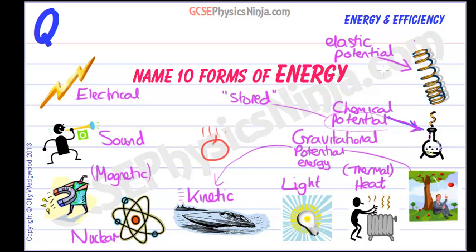So there we are — 10 forms of energy. Remember that the word potential means stored, and that the three types of potential energy that come up very often are gravitational potential energy, chemical potential energy, and elastic potential energy.